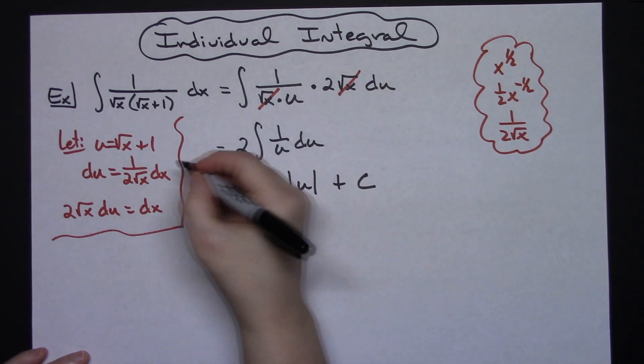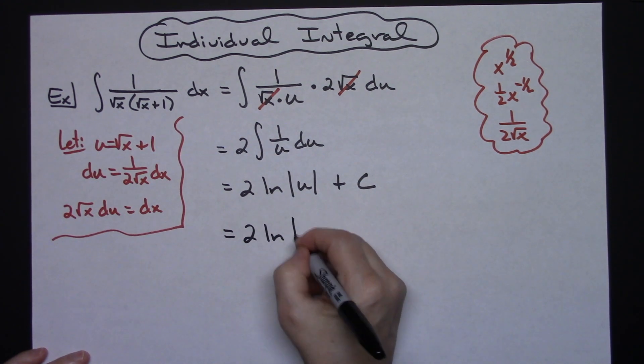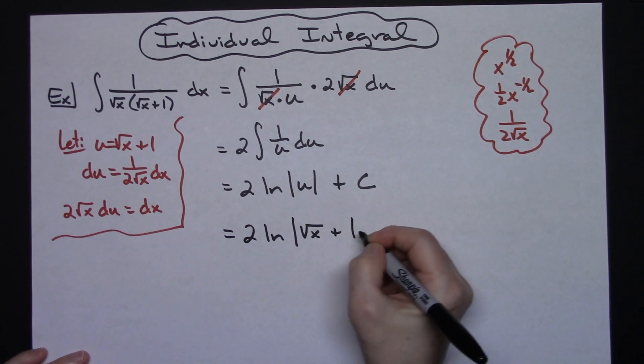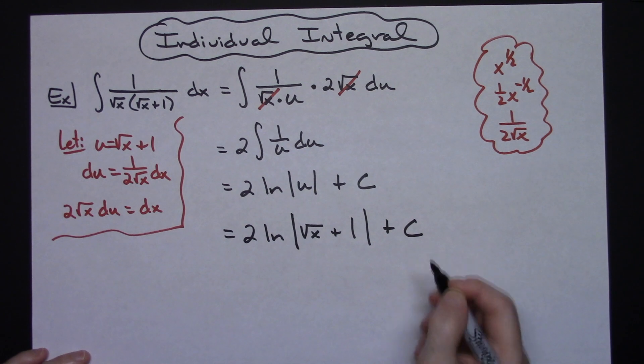Replacing that u with what I said it originally was, we get 2 natural log absolute value square root of x plus 1 close the absolute value bars and then plus c.